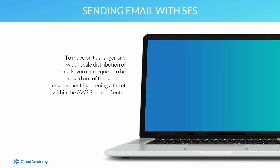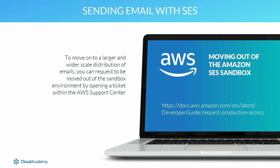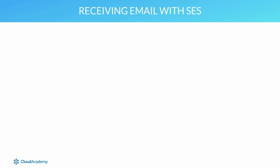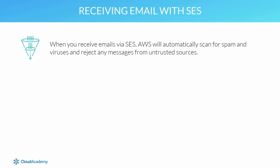To move onto a larger and wider scale distribution of emails, you can request to be moved out of the Sandbox environment by opening a ticket within the AWS Support Center to increase the sending limits for SES. Once out of the Sandbox environment, you can monitor your sending activity, including the number of bounced or complaint emails, and you can verify entire domains rather than individual email accounts. As part of the managed service, AWS will automatically scan incoming emails for spam and viruses and reject messages from untrusted sources.